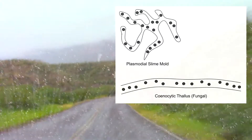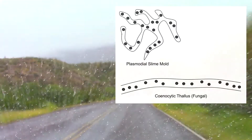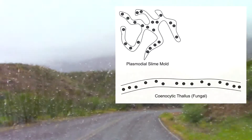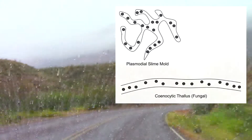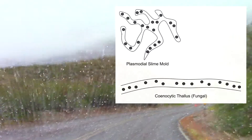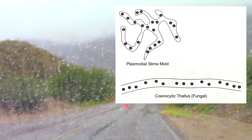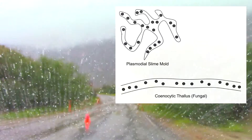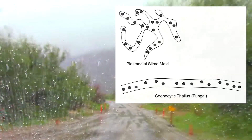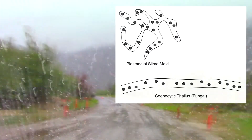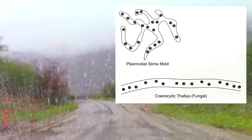Plasmodial slime molds are also cenocytic. Here we have multiple nuclei found within a single cytoplasm in relatively large macroscopic organisms.